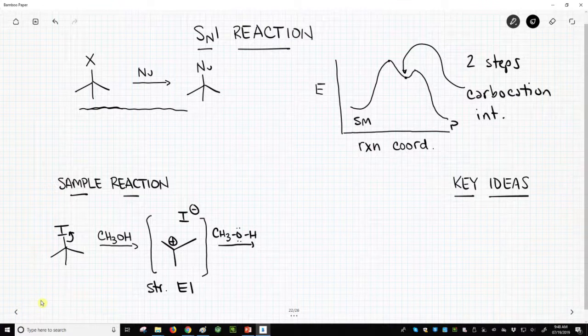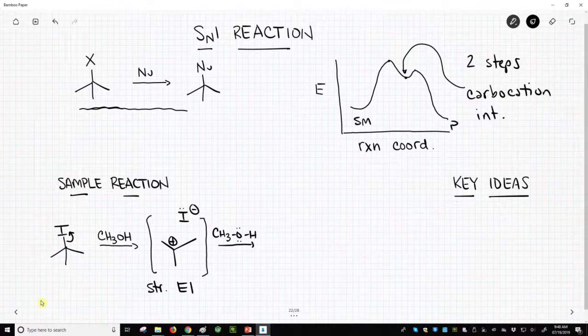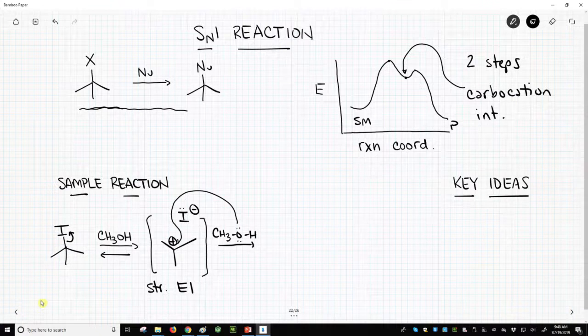We have methanol. Now, we could say iodide has electron density. Why doesn't it just attack? Well, it could. Normally, this step is reversible. It goes back and forth. But eventually, you tend to have a lot of methanol around. And eventually, methanol is going to find this, and it's going to react instead of the iodide. So it will attack our carbocation.